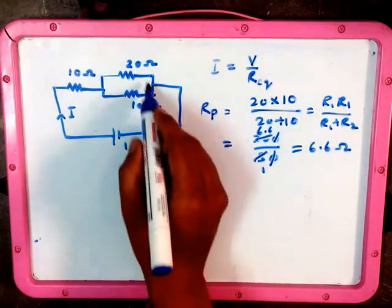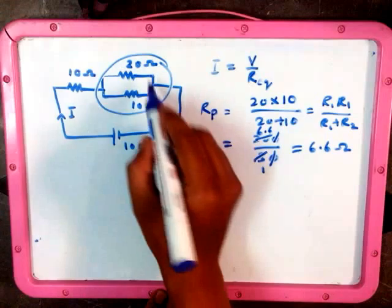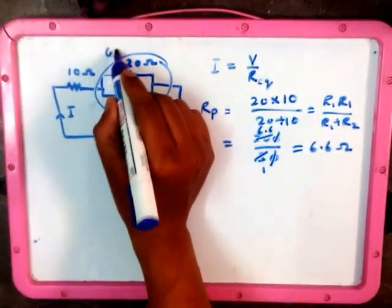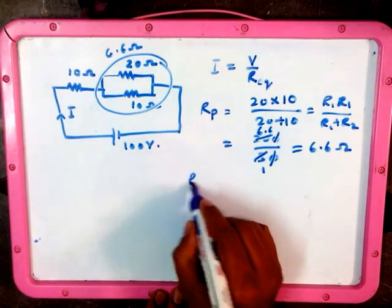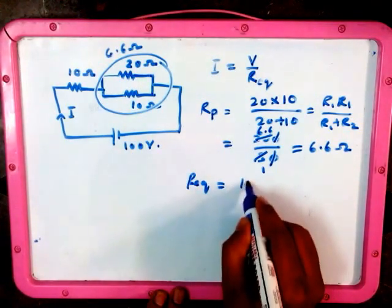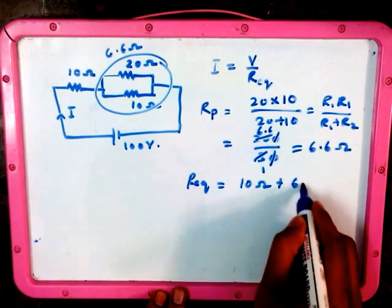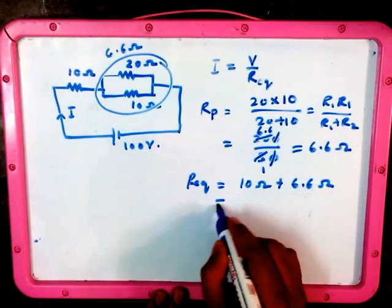Then this resistance is reduced to a single resistance which is 6.6 ohm, which is in series with the 10 ohm. So R equivalent therefore will be 10 ohm plus 6.6 ohm, so we get 16.6 ohm as equivalent resistance.